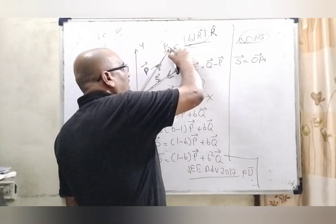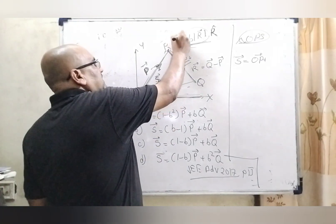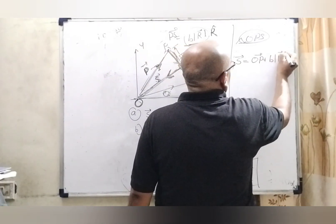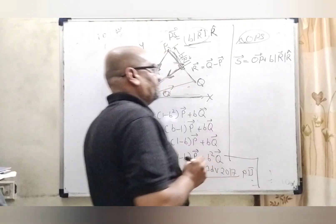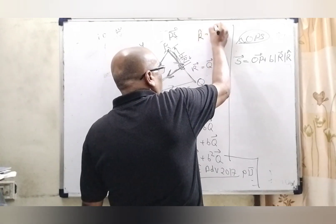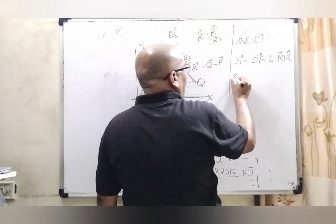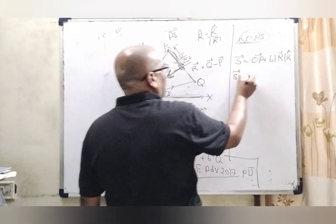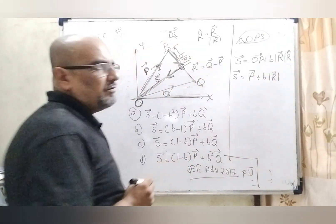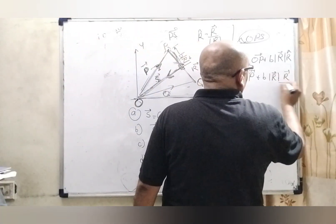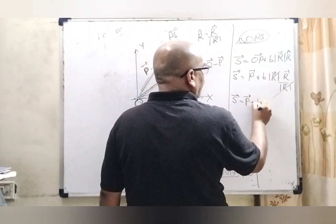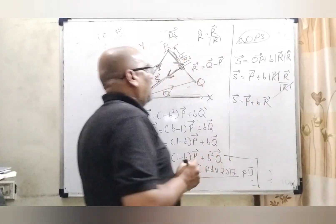To convert PS into a vector, we multiply by the unit vector: PS vector equals B times modulus R multiplied by R-hat (the unit vector of R). The unit vector R-hat can be written as R vector divided by modulus R. So the modulus R terms cancel out, giving S vector equals P vector plus B times R vector.